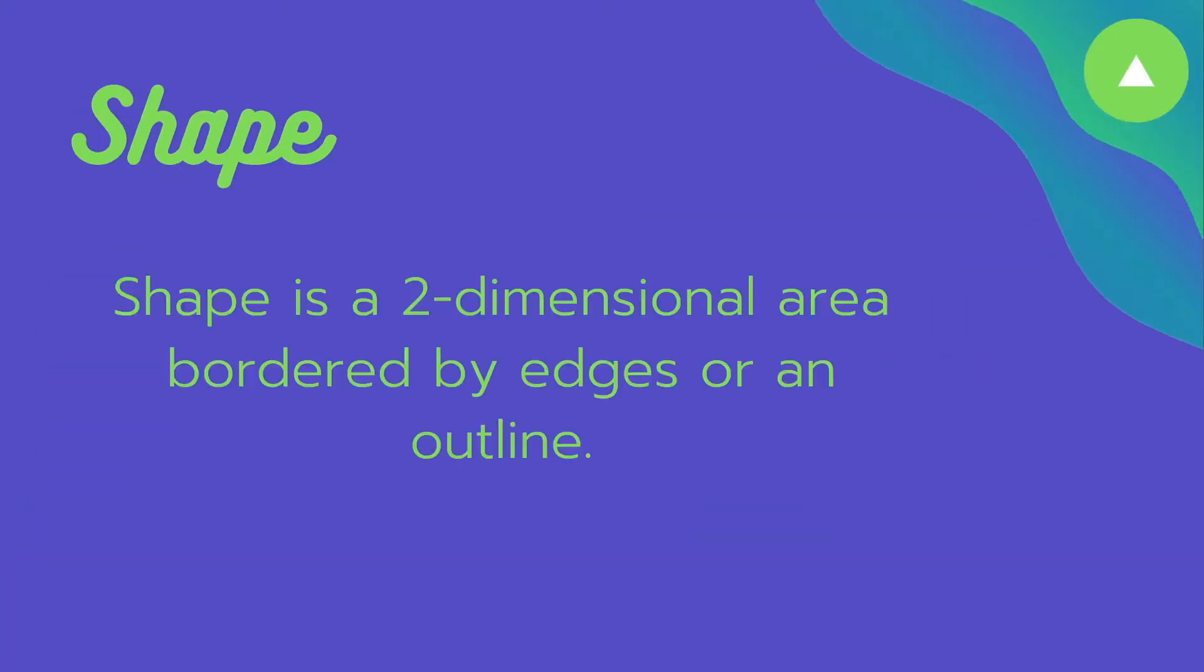Let's look at shapes. What is the definition of a shape? A shape is a 2D or two-dimensional area bordered by edges or an outline.